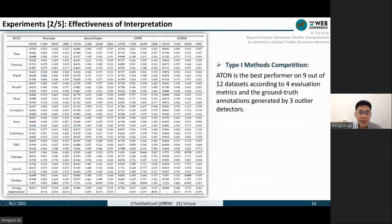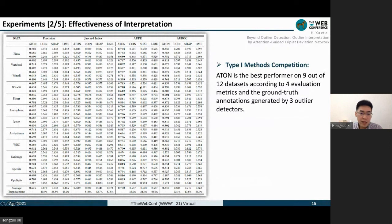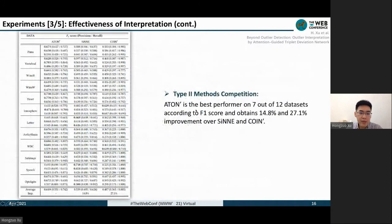Here is the comparison between Type 1 methods, and ATON is the best performer on nine out of the twelve datasets. The specific results can be referred to in our paper.